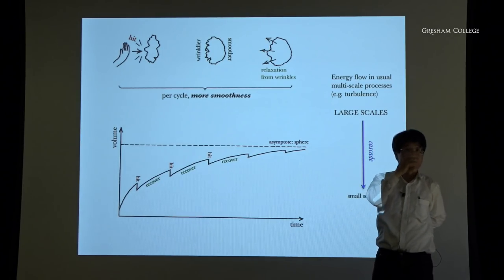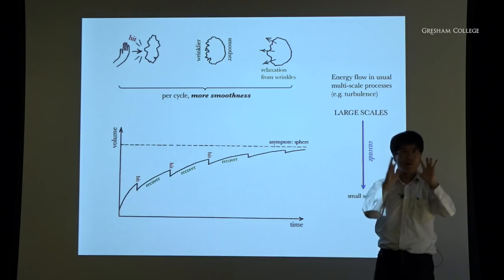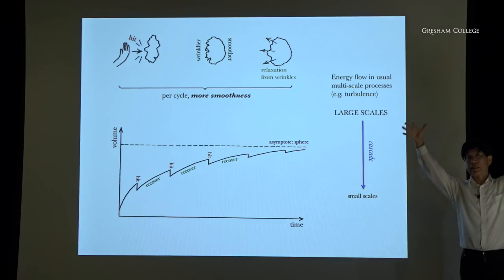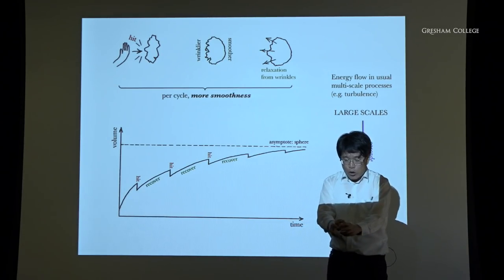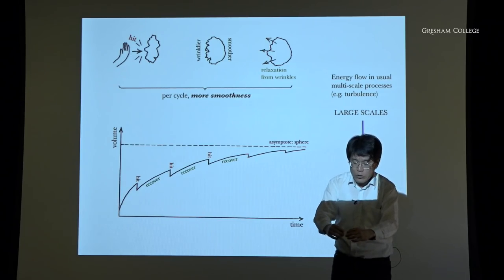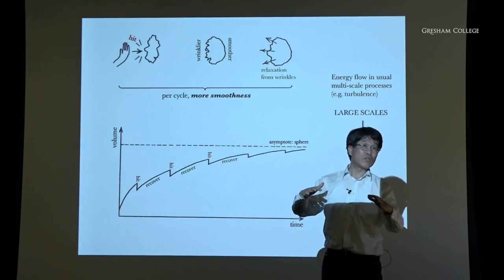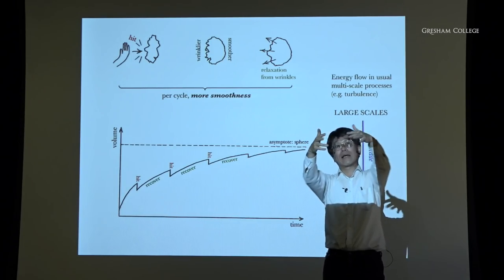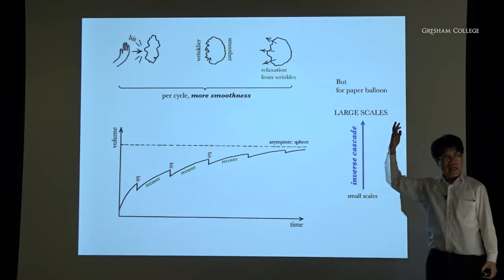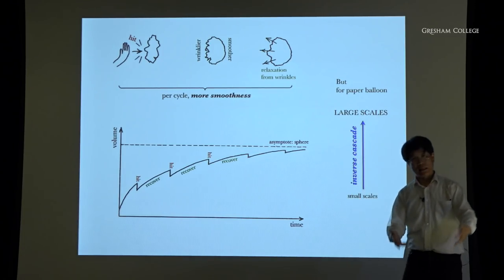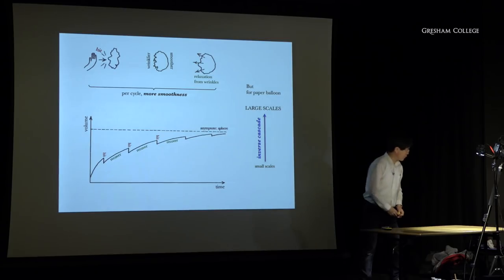But in this paper-balloon case, what are the scales? There are lots of wrinkles on a small scale at first. Those wrinkles give way to larger wrinkles, then grooves, then larger-scale irregularities on a spherical surface. You get an inverse cascade from small scale to large scale. This kind of inverse cascading is extremely rare in nature — and this is therefore a really strange phenomenon on all sorts of levels.